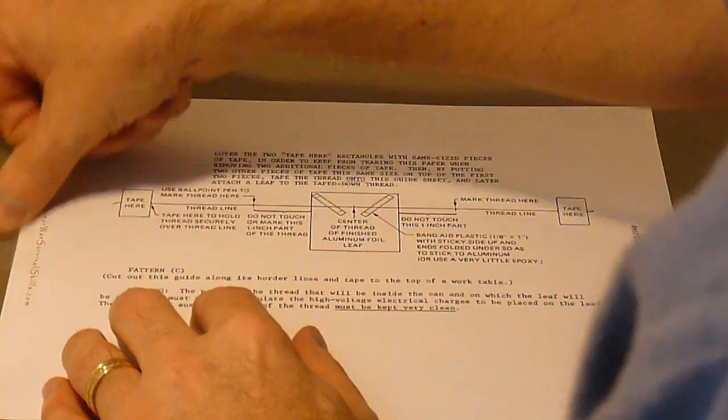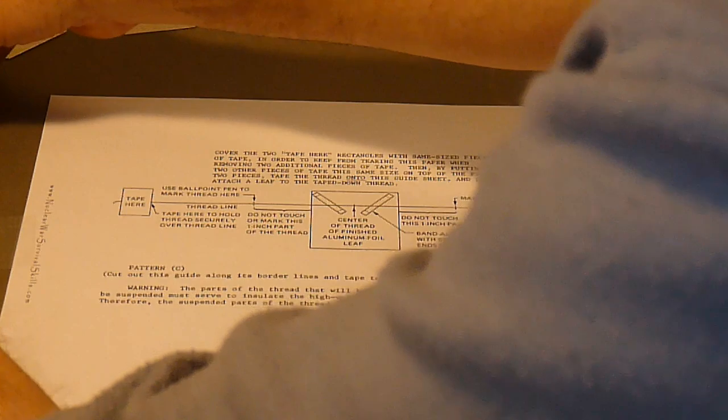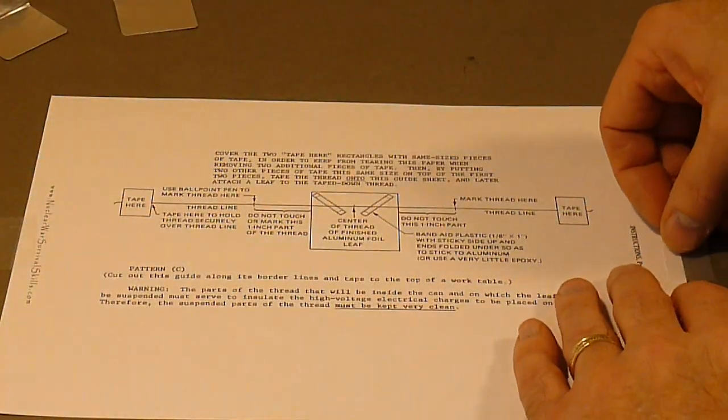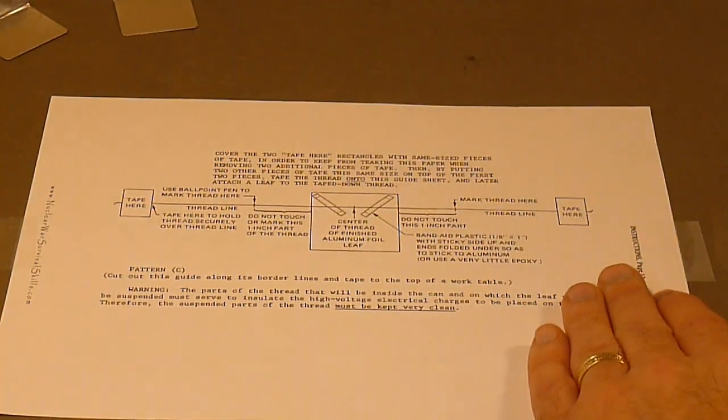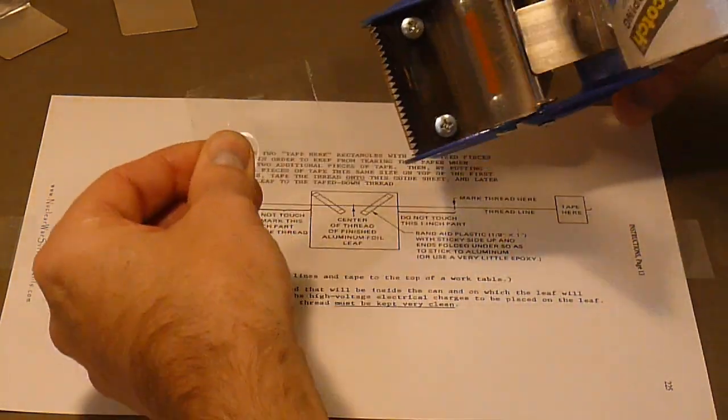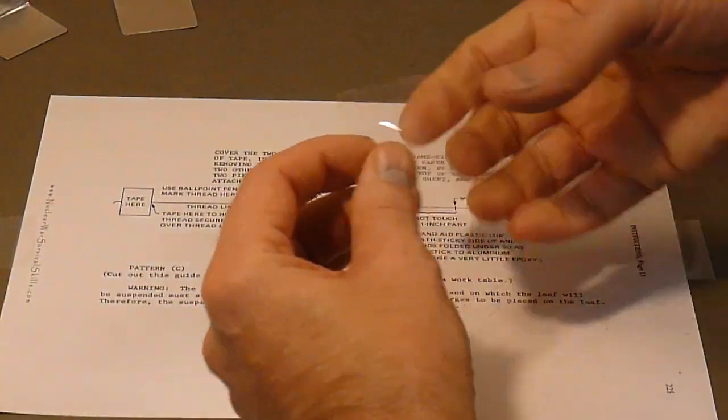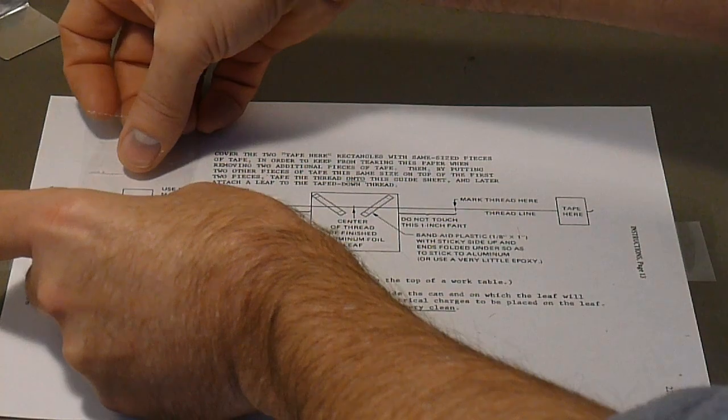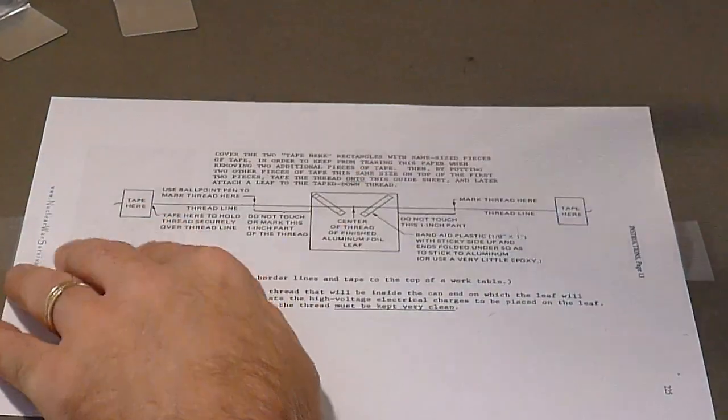Tape down the page marked 225 to your table. Place a 3-inch long piece of clear packing tape over the boxes marked 'tape here.'